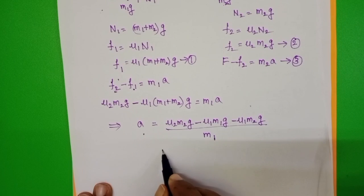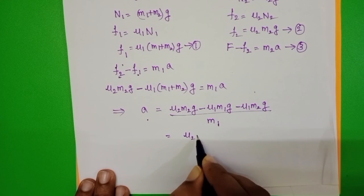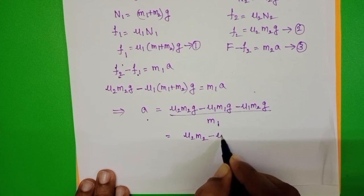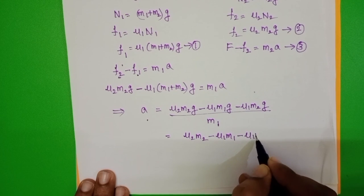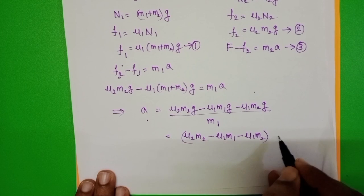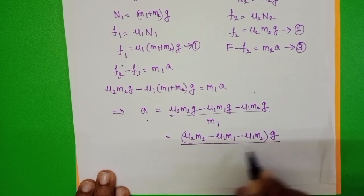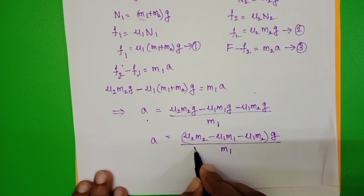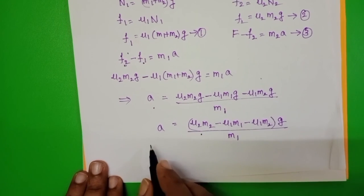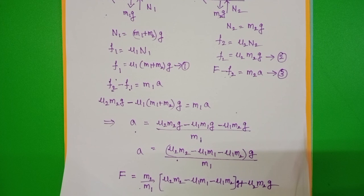Taking g common, the relative acceleration is g divided by m1 times (mu2*m2 minus mu1*m1 minus mu1*m2). Substituting this acceleration into equation 3 gives the formula for the maximum force at which the two blocks relatively accelerate without slipping.